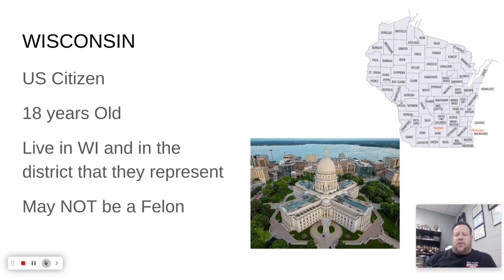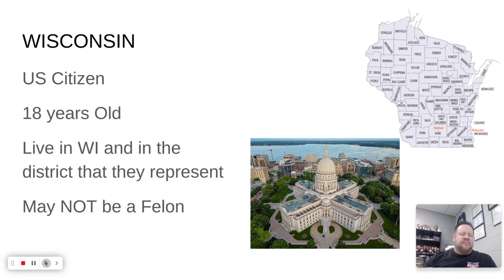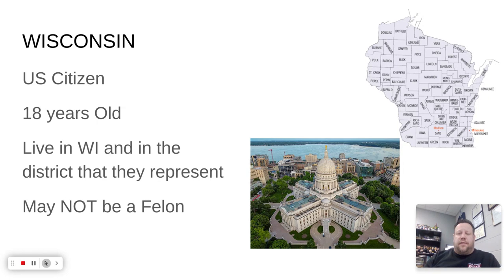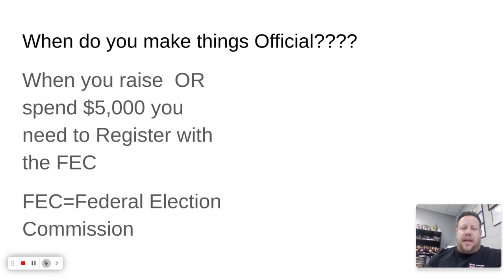In Wisconsin, if you want to run for a state job — governor, state representative, and so on — the requirements are a bit different. You must be a U.S. citizen, at least 18 years old, and live in Wisconsin or the specific area you represent. For example, if you represent Assembly District 40 — covering parts of Iowa, Sauk, and Columbia County — your address must match that district. One unique Wisconsin rule: you may not be a convicted felon and run for a Wisconsin position.